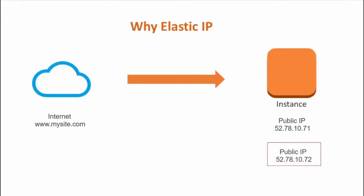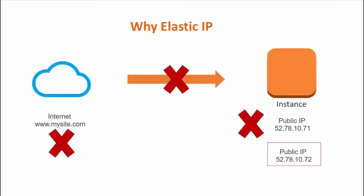This means that your original public IP is no longer valid. That means your link is no longer valid, and your site is now pointing to an invalid public IP address. In such a case it's absolutely necessary to have an Elastic IP or a static IP which does not change when your instance restarts.